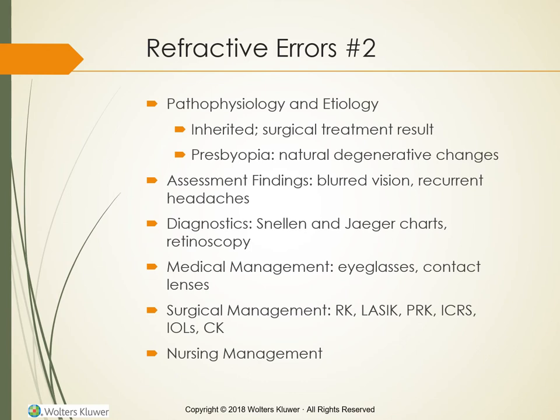For PRK: use antibiotic and anti-inflammatory eye medications as ordered for two to five days after surgery. Clear contact lenses are placed on each eye for two to five days to prevent infection. The epithelial layer begins to regenerate in two to five days but complete healing takes three to four months. Avoid rubbing eyes for at least several weeks and avoid strenuous exercise for one week. Use pain medication for one to two days if necessary, as pain fibers are located on the surface of the cornea.